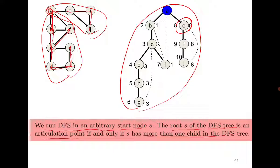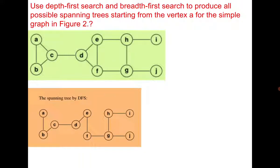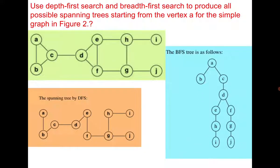In the next class we will see the shortest path algorithm. Before that, one more interesting exercise: use DFS and BFS to produce all possible spanning trees starting from vertex A for the following graph. Please try it yourself. If you try it, you will observe that for BFS the answer is unique, but for DFS it is not unique.